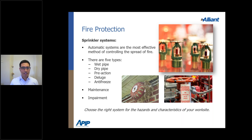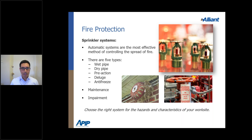There are several types of sprinkler systems: wet pipe, dry pipe, preaction, deluge, and antifreeze. Choose the right system for the hazards and characteristics of your work site.